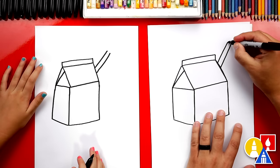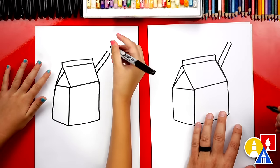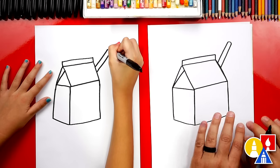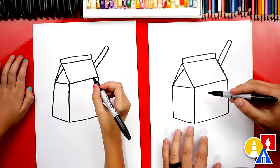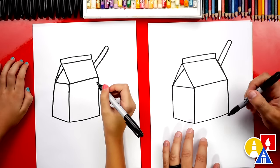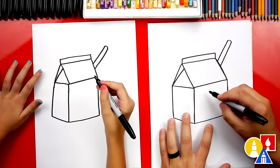Now we can connect the top with a curve so that our straw looks 3D and round. The shape of it is round. What should we add to our carton of milk so that we know it's milk? A cow face. Okay, let's do that.